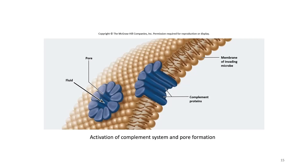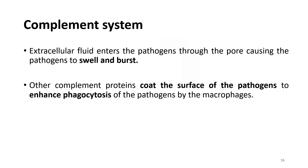This diagram illustrates the functions of complement proteins. Complement proteins embed in the plasma membrane of the target microbe, forming small holes or pores that allow fluid to enter the cell. The extracellular fluid enters the pathogen through the pores, causing the pathogen to swell and burst. Another complement protein coats the surface of the pathogen to enhance phagocytosis by macrophages.